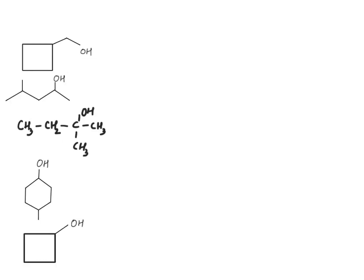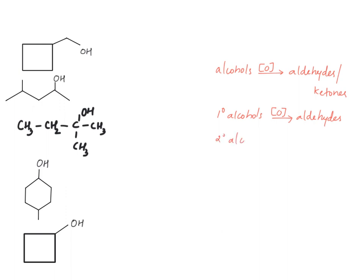In this question we are provided with five compounds and we need to write the condensed or line angle structure when alcohols are getting oxidized to corresponding aldehydes or ketones. When primary alcohols are oxidized we get corresponding aldehydes, and when secondary alcohols are oxidized we get ketones. When tertiary alcohols are being oxidized, we observe no reaction.